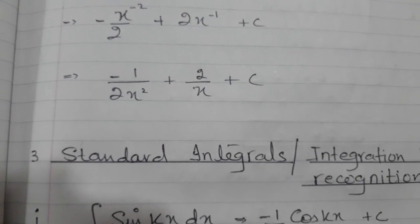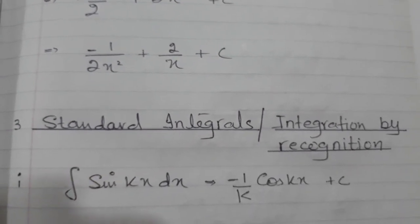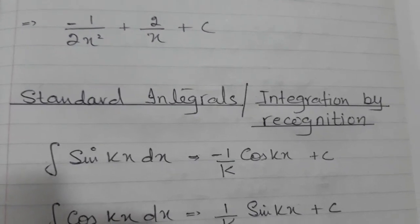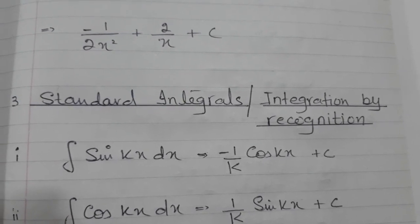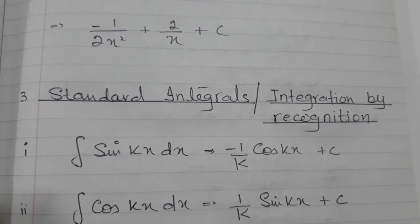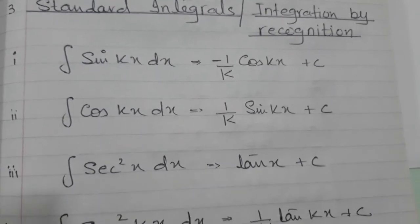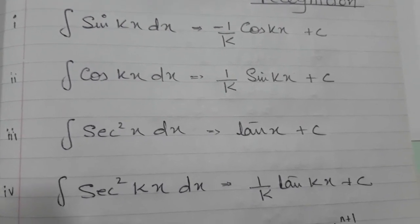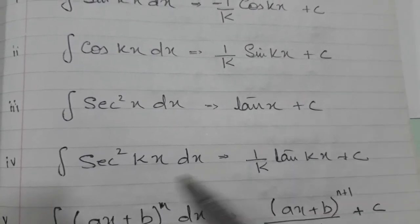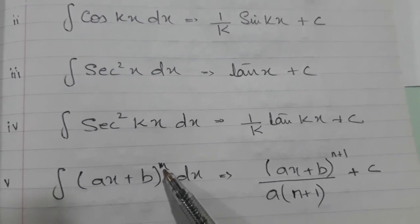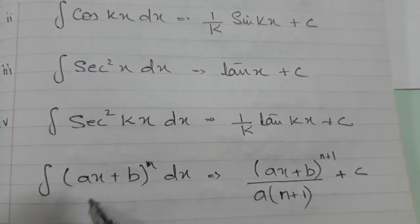Now let's come to some standard integrals, which are also called integration by recognition — we have done quite a few of these before. For example, the integral of sin(kx) will be minus cos(kx) divided by k, since k comes into the denominator. We already know these, so we just write the direct answers. Because the differentiation of tan x is sec², the integration of sec²x is tan x. For a composite function with a linear function inside, we apply the same recognition approach — this method applies when you have a linear function inside.